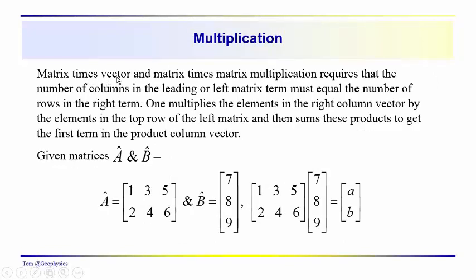For multiplication, we have a matrix times a vector. The matrix is a three-column quantity. In order to multiply, we have to have the same number of columns in the multiplier A as we do rows in the multiplicand — the term on the right. Here we have three columns in A and three rows in B, and we end up with a two-term output vector.